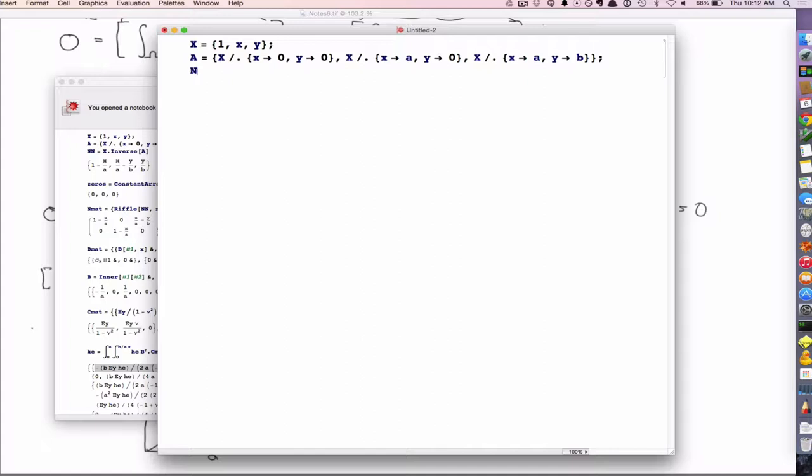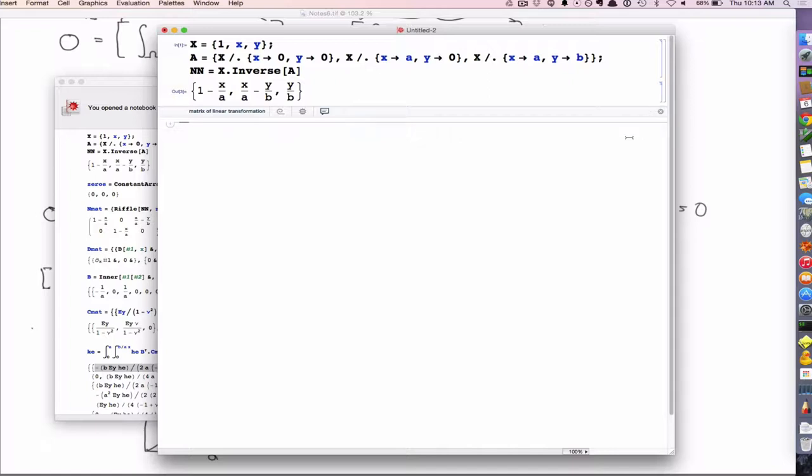So my shape functions are x dot inverse A, right? And again, we could have just written those down from the formulas that we showed last time. The beauty of Mathematica is it probably would have taken me longer to type them in than to solve for them. So I have those three shape functions, but I need to construct this shape function matrix.